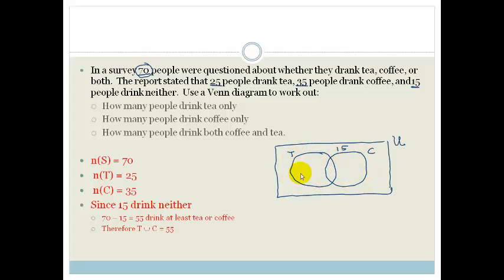we can say that the union of this, this plus this has to equal 55. But we're going to let this little bit here be x, because we want to know how many people drink both tea and coffee.